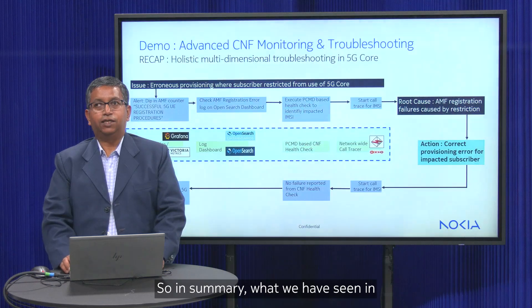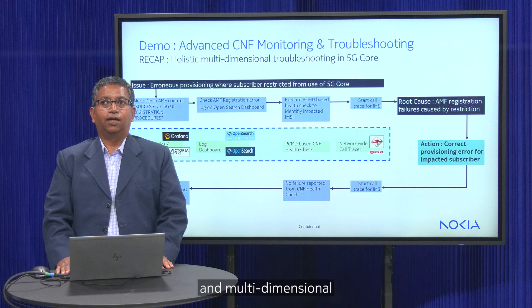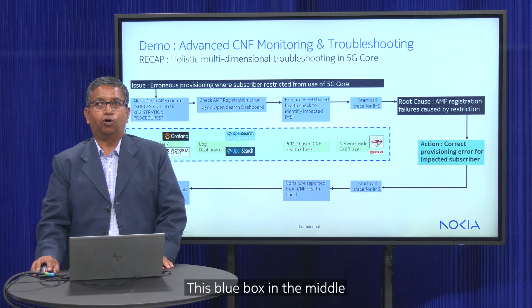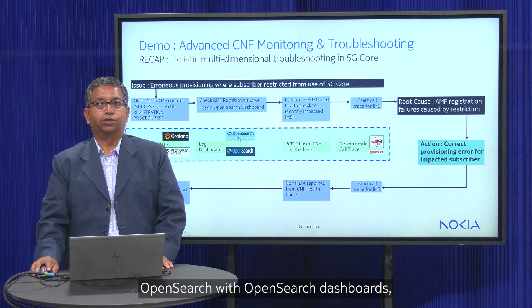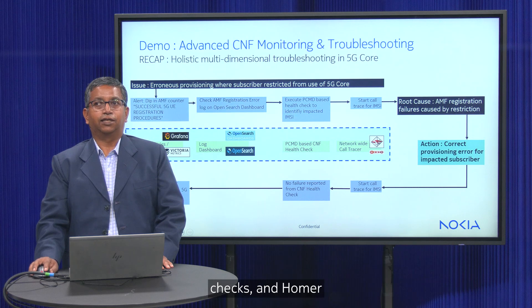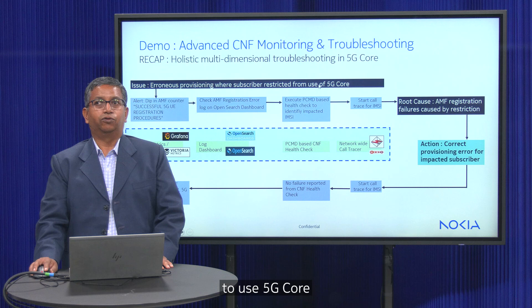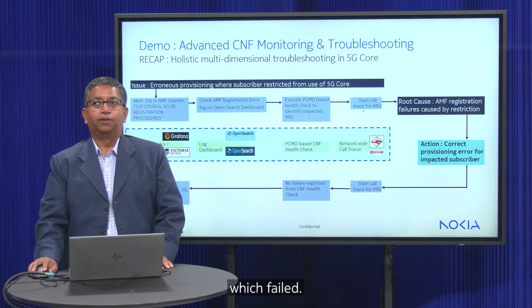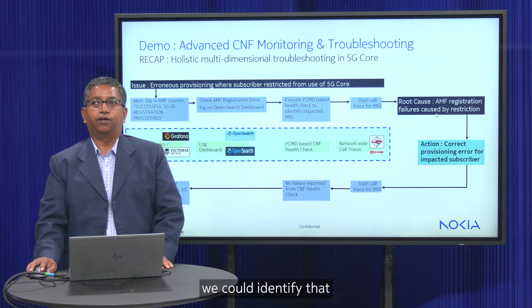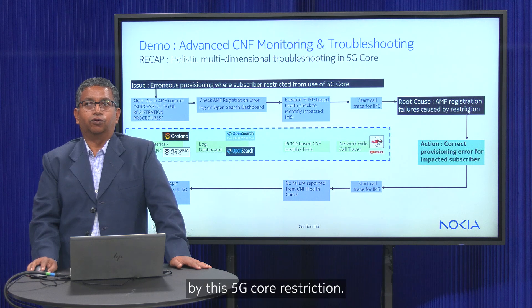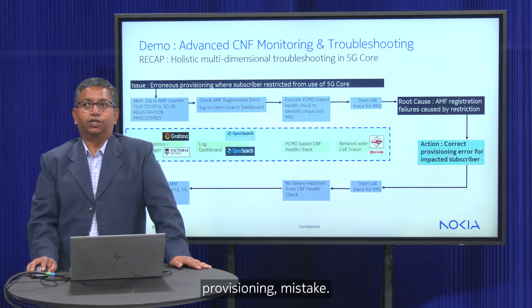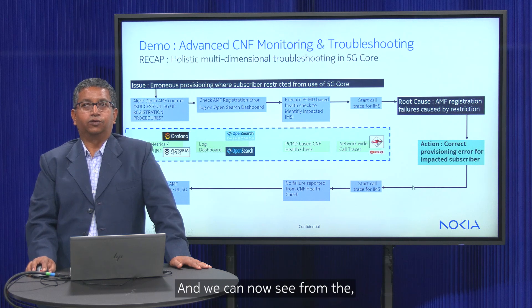In summary, this demo is a recap of holistic and multidimensional troubleshooting in the 5G core. The demo system includes open source assets like Victoria Metrics, Grafana, OpenSearch with OpenSearch dashboards, TCMD-based CNF health checks, and Homer-based end-to-end call tracing. We started with a subscriber restricted from using 5G core, causing registration failures. We used TCMD records to identify the failing subscriber, started a call trace, and identified that AMF registration failures were caused by the 5G core restriction. We corrected that provisioning mistake, and KPI dashboards confirm the recovery.